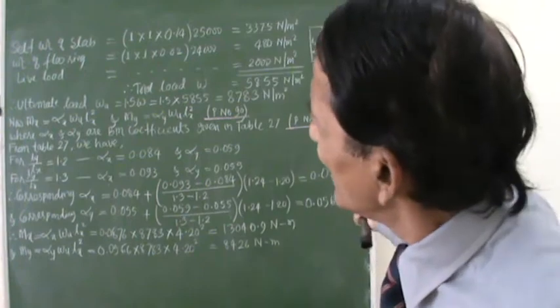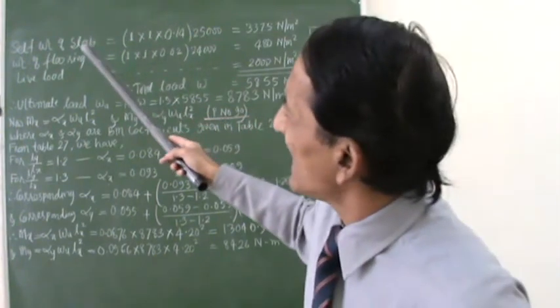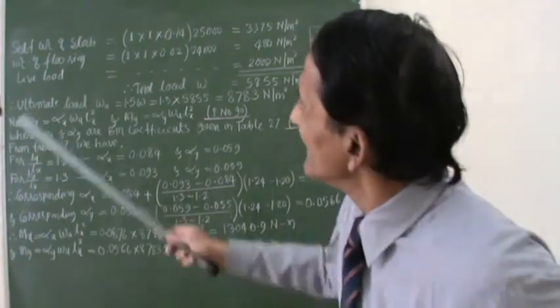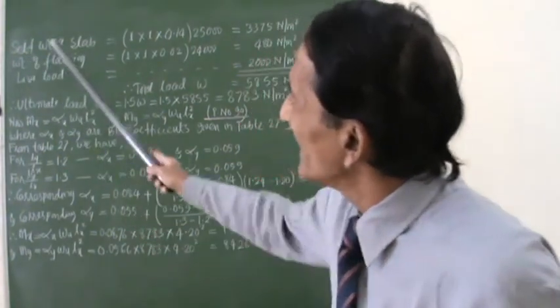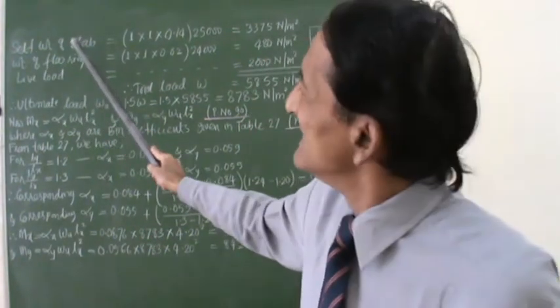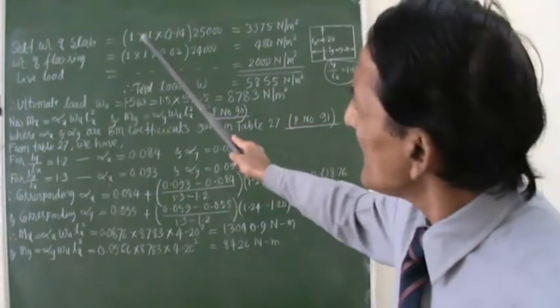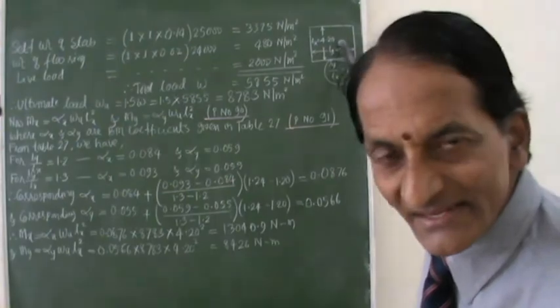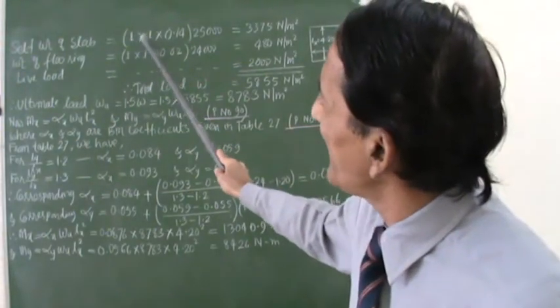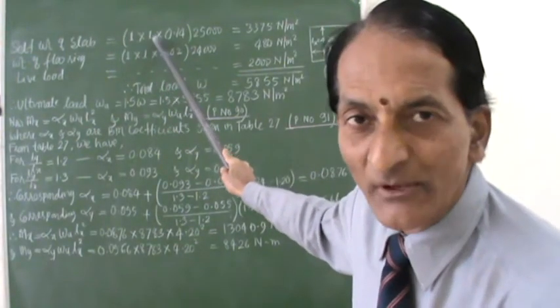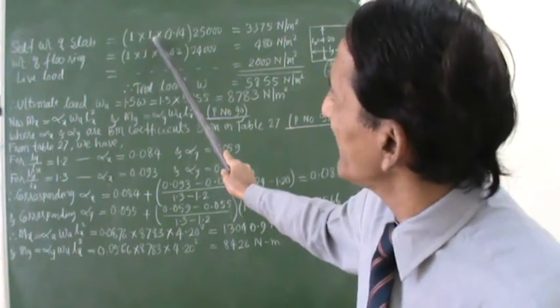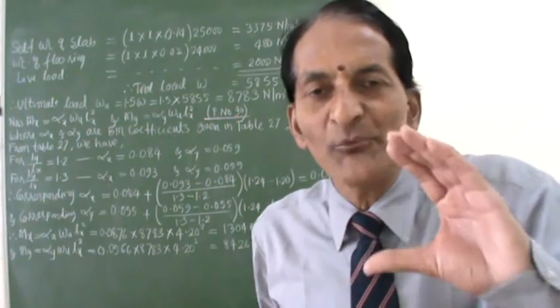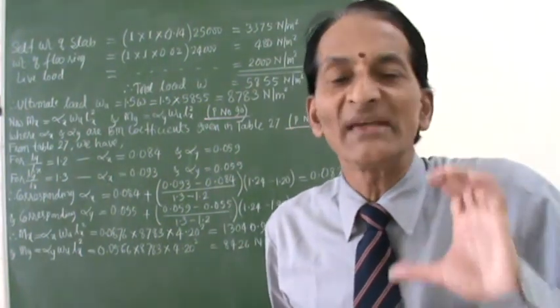So now, we will try to start calculating the loads. I will come down to this self-weight of the slab. Self-weight of the slab, 1 meter in this direction, 1 meter in this direction. On this area of 1 meter by 1 meter, thickness of the slab we have assumed it as 140 millimeters.